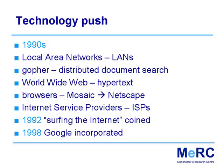By the 1990s, we had local area networks — everybody began to get their own computer on their desk, connected to others on the same site. We moved away from the idea of dumb terminals connecting to great big machines. Then gophers enabled searching for documents across computers, and of course the World Wide Web transformed the world enormously. Hypertext — just being able to click on links — browsers came along to handle that, first Mosaic, then Netscape, but there are lots of browsers now. Internet service providers appeared and began to compete, which started to drive down the cost, which was really, really important. And Google only started in 1998.